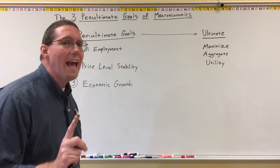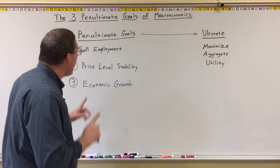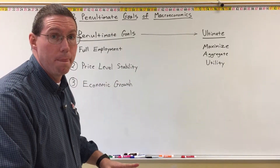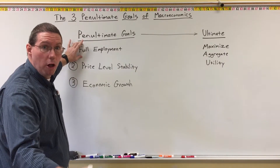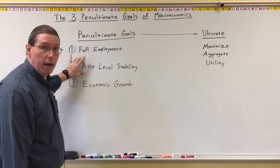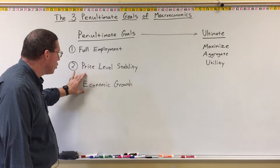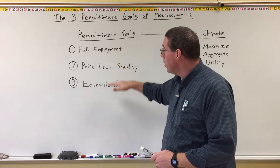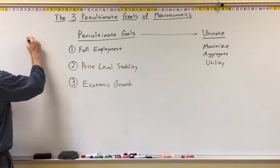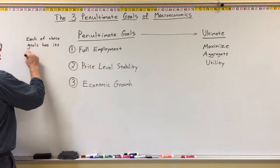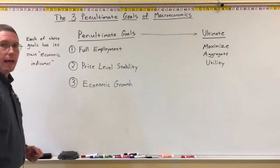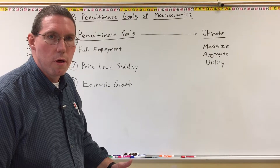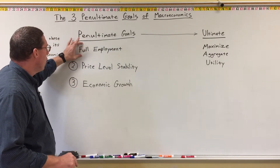But here's the cool thing: we have figured out how to create concrete indicators for each one of these penultimate goals. We can mathematically measure full employment using an economic indicator. We can measure price-level stability using an economic indicator, and we can measure economic growth using an economic indicator. Each one of these goals has its own economic indicator.